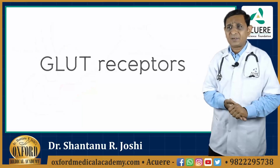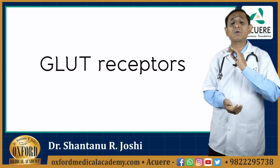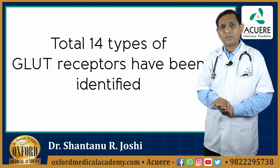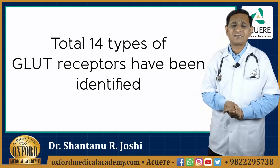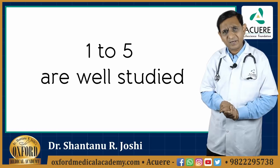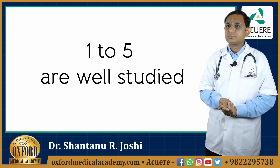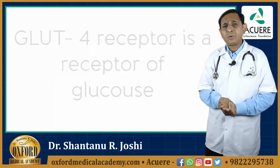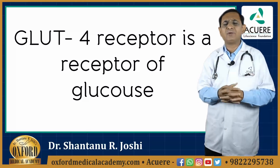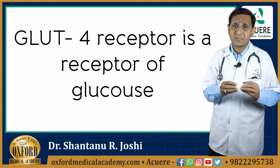The most common receptors used for entry of sugar into the cell are called GLUT receptors. Till date, a total of 14 types of GLUT receptors have been identified, out of which 1 to 5 are well studied. Out of these 5, the GLUT4 receptor is the most commonly used receptor of glucose, and it works in coordination with insulin.